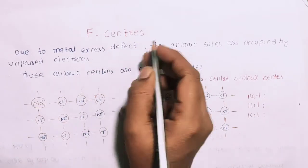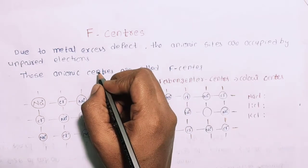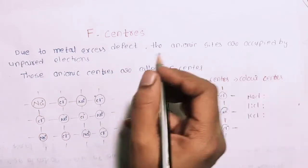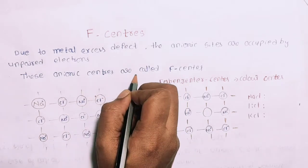Due to metal excess defect, the anionic sites are occupied by unpaired electrons. These anionic centers are called F-centers.